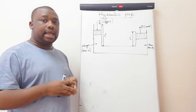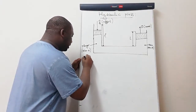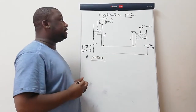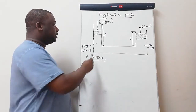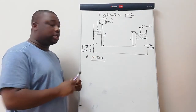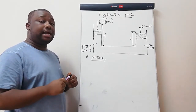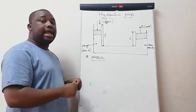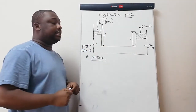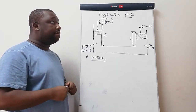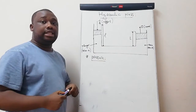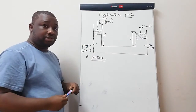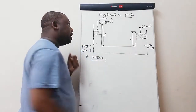Let's talk about the hydraulic press setup. We have the small cylinder called the plunger — this is where the operator applies the effort, called small f. We also have the big cylinder called the ram, where we have our load that has to be lifted. The stroke length of the plunger is measured on the small cylinder, and the stroke length of the ram is measured on the big cylinder.